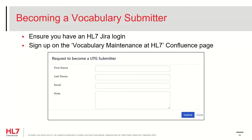A contact information form will pop up. If you're an HL7 member, simply fill out your details and click Submit. This will send an email to a JIRA administrator who will ensure that you are given the correct permissions to be able to submit change proposals. If you are not an HL7 member and wish to become a submitter, you must leave a comment in the note field explaining why you want to become a submitter and describe your relationship to HL7 and UTG.